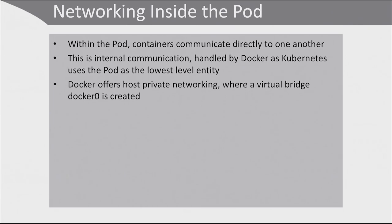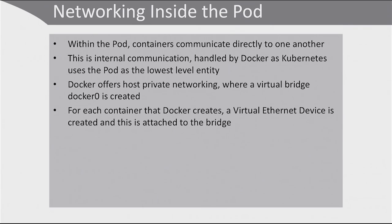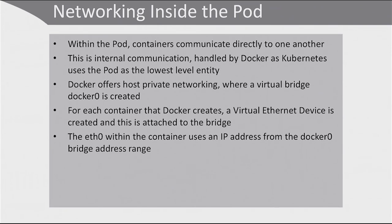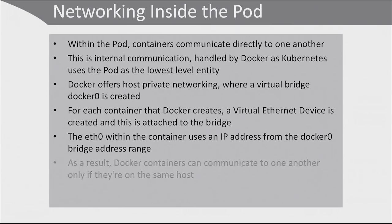Docker offers host private networking, where a virtual bridge with the name Docker Zero is created. For each container that Docker creates, a virtual ethernet device is created and attached to the bridge. The virtual ethernet device is the glue outside of the container that connects the container to the bridge. The eth0, which is the name of your network card within the container, uses an IP address from the Docker Zero bridge address range. As a result, Docker containers can communicate to one another only if they are on the same host.